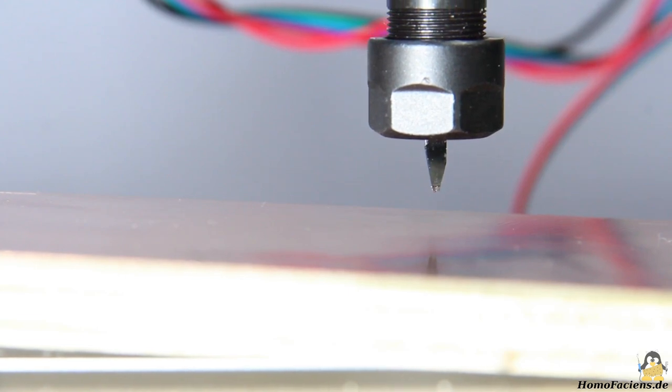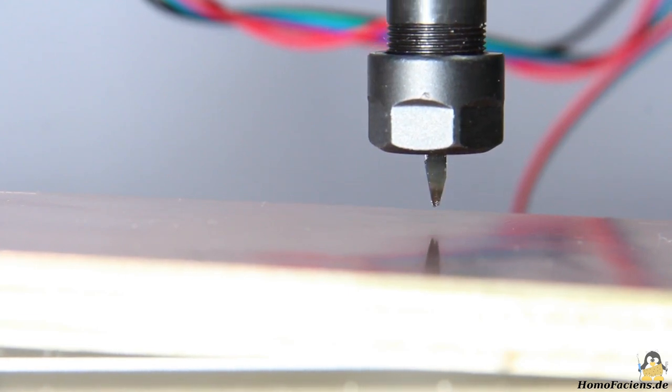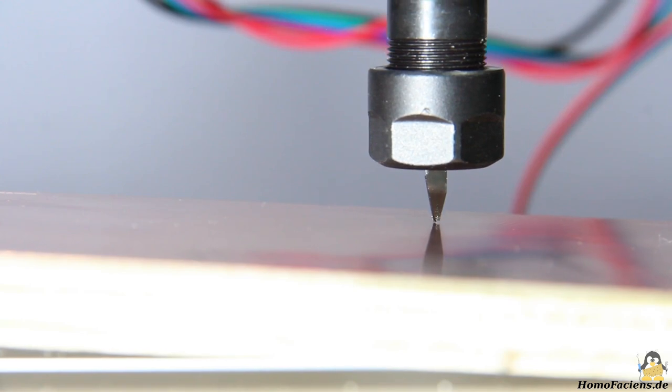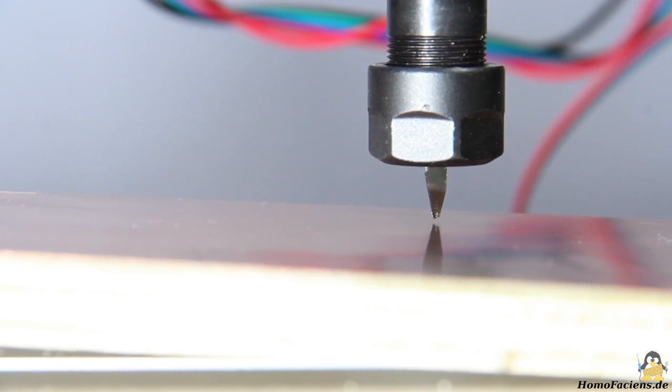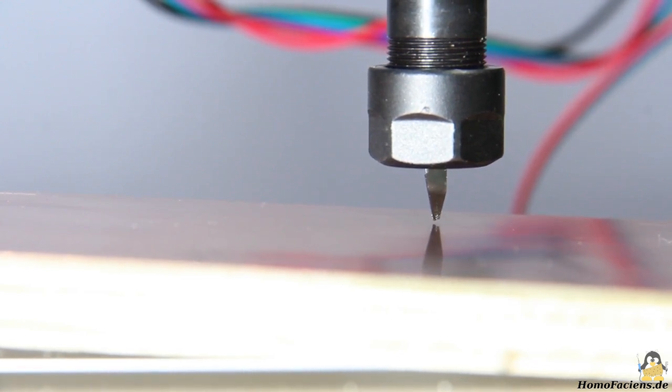You can see that the loose corner of the circuit board visibly bends down in the first pass, an effect that is much less to see in the second one.